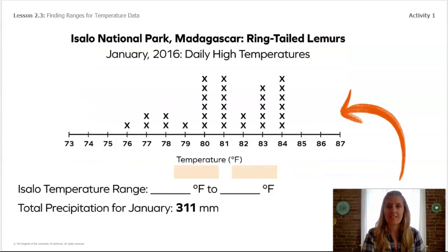So, let's take a look at some of our data. First, we'll use this line plot to find the range of temperatures in Isalo National Park where the ring-tailed lemurs live. What do you notice about the highest number and the lowest number? Could you give us the range?